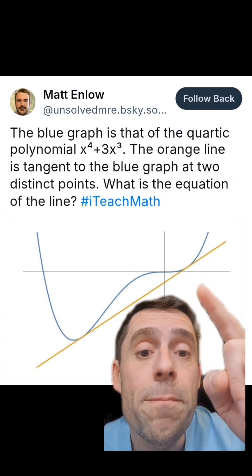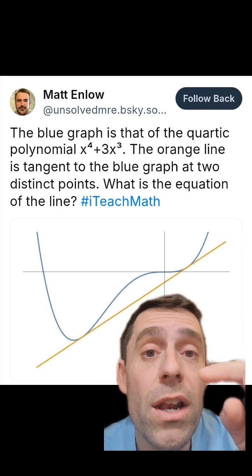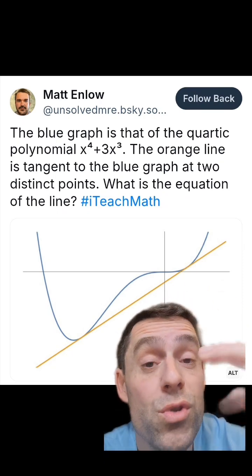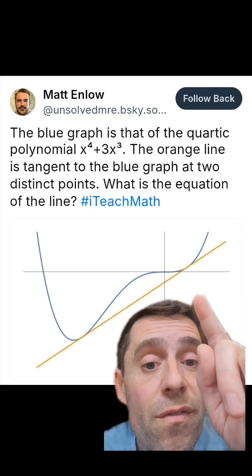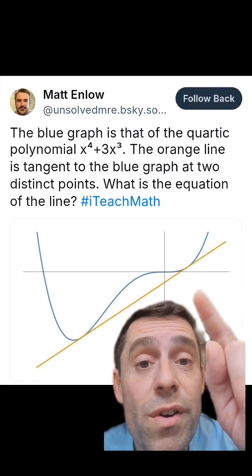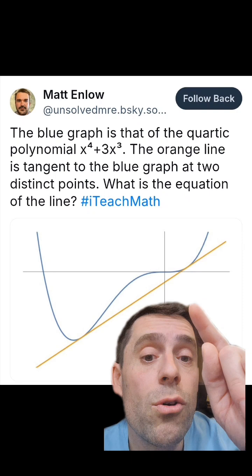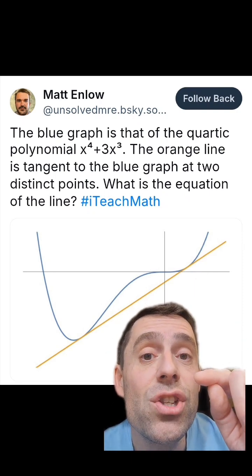And you can actually, what you can do is find the fourth degree Taylor approximation of that polynomial, which is itself, but centered around x equals a, and then find the difference between that fourth degree Taylor polynomial and the tangent line.